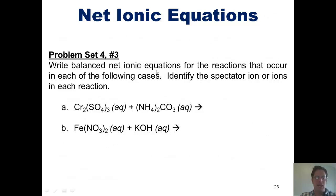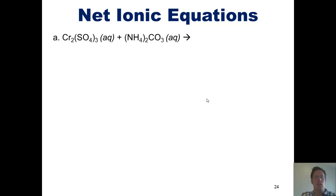Write balanced net ionic equations for the reactions in each of the following cases, and identify the spectator ions in each reaction. I'm not going to do part B, but I will do part A and let you attempt part B on your own. Let's take a look at our overall equation: chromium sulfate getting together with ammonium carbonate.